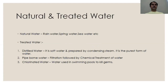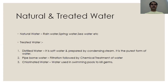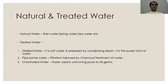Natural and treated water. Natural water includes rainwater, spring water, sea water, ocean water, lake water, etc. Treated water includes distilled water, pipe-borne water, and chlorinated water. Distilled water is the most purified form of water — it is soft water prepared by condensing steam. Because it undergoes distillation, no minerals will be present in it, making it the purest and softest form of water.